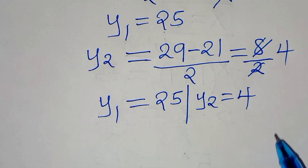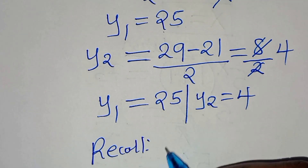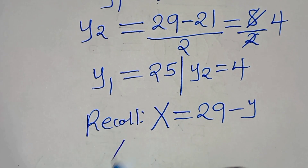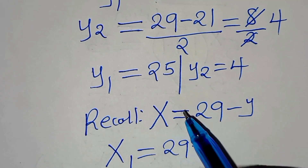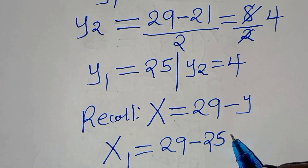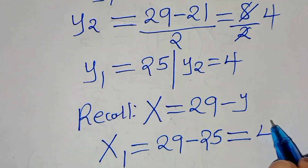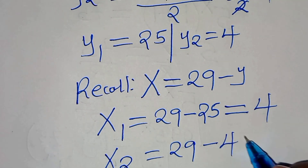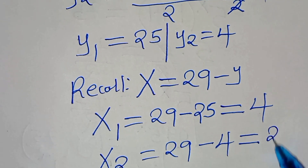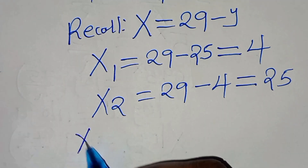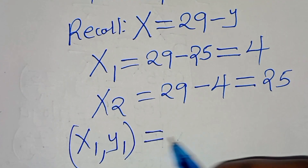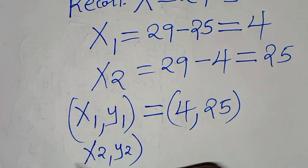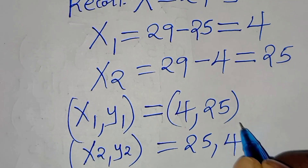Now we can solve for the corresponding values of x. From equation 3, x equals 29 minus y. So x1 equals 29 minus y1 equals 29 minus 25 equals 4. And x2 equals 29 minus y2 equals 29 minus 4 equals 25. Therefore (x1, y1) equals (4, 25) and (x2, y2) equals (25, 4).